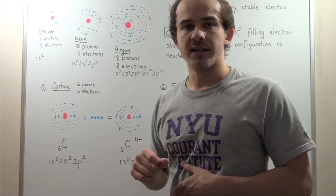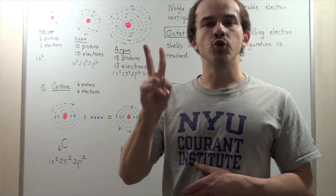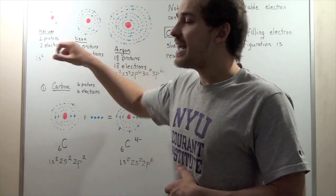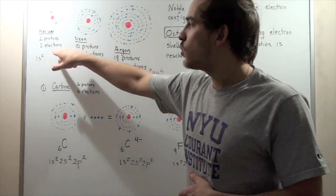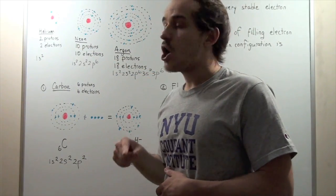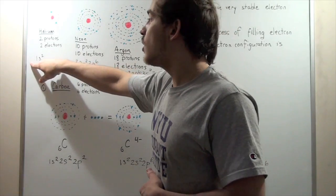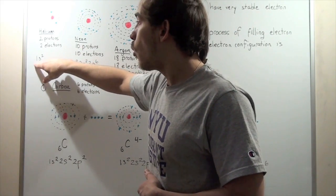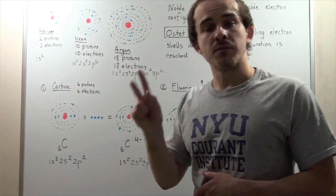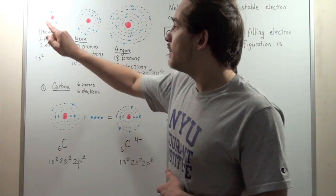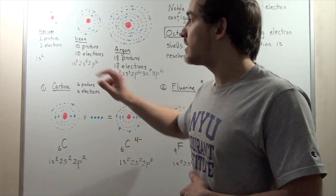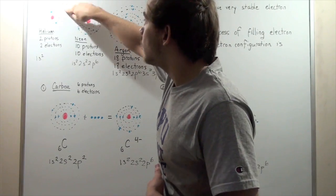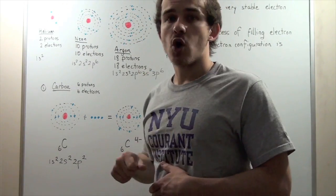Let's look at Helium. Helium has two protons found in the nucleus and two electrons. These two electrons are going to be found in the 1s orbital. The 1s orbital can have a maximum of two electrons. Because Helium has two electrons, these two electrons will be found in the 1s orbital.